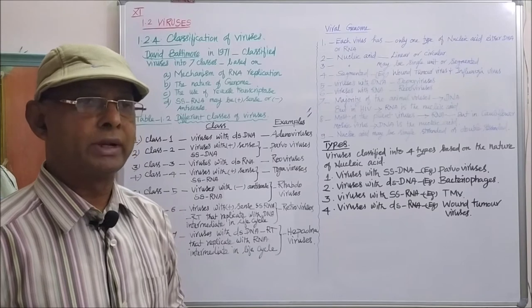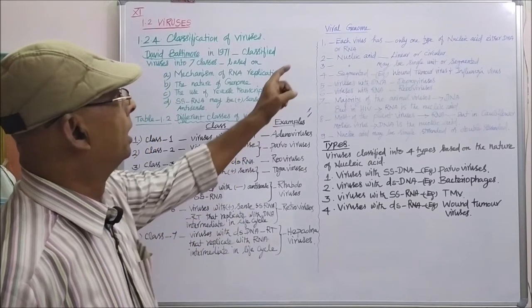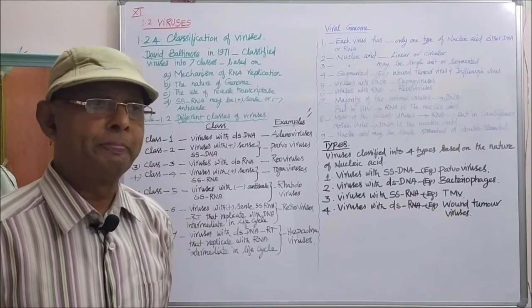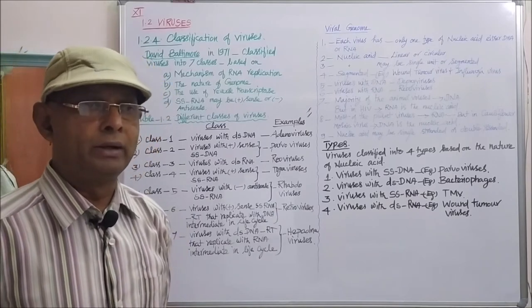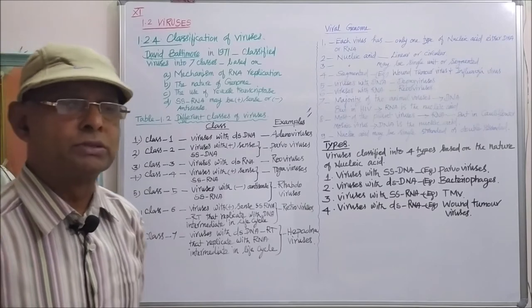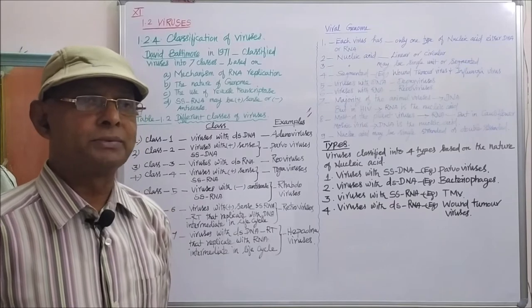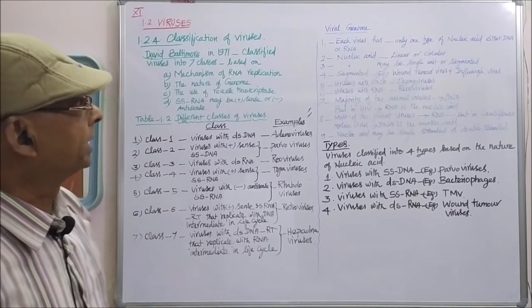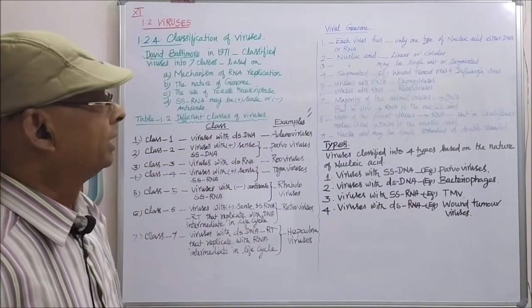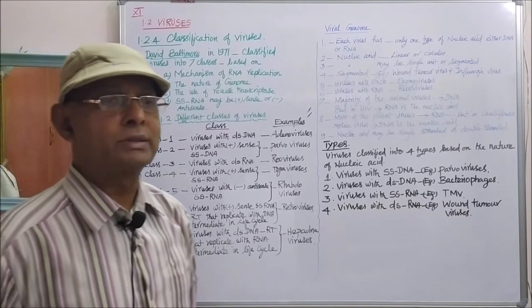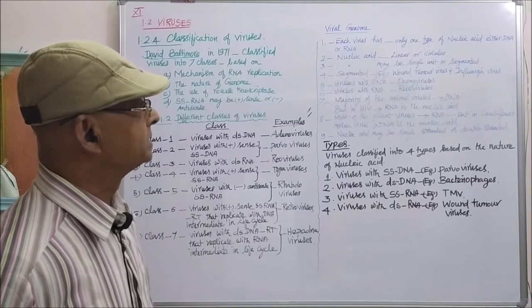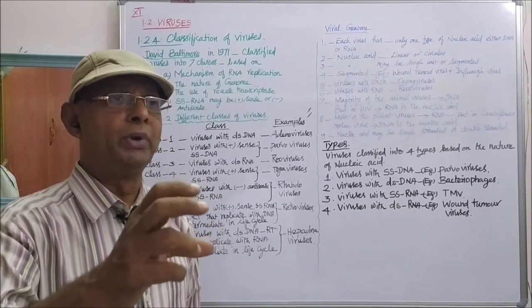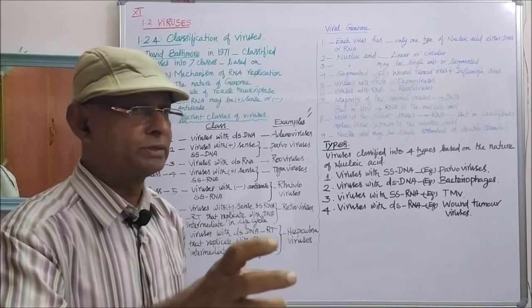The nucleic acid present in a virus is considered the genome of the virus. Each virus has only one type of nucleic acid, either DNA or RNA. In all living organisms both RNA and DNA can be seen in each cell, but viruses are the exception — each virus has either DNA or RNA. The nucleic acid may be linear or circular, and may be a single unit or segmented. For example, in wound tumor virus and influenza virus, the nucleic acid is segmented into small segments.